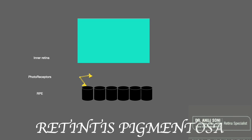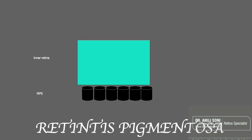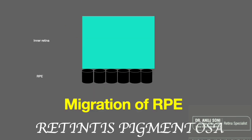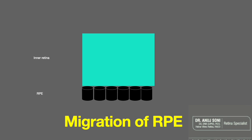With photoreceptor and outer retinal loss, the inner retina comes into contact with the RPE. This brings the RPE into close contact with blood vessels, as the inner retina contains blood vessels in the outer plexiform layer. Since there is loss of photoreceptors, there is a decrease in oxygen demand, leading to retinal arterial constriction. RPE cells then start detaching from Bruch's membrane, as they are attracted to blood flow and excess oxygen.